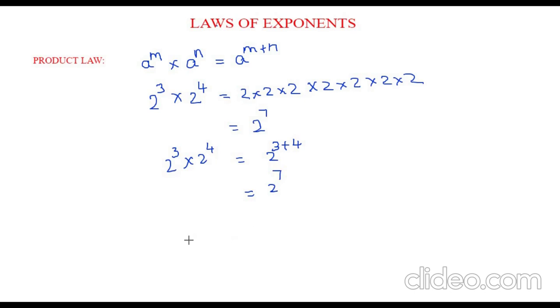Now let's take another example: 3 to the power of 8 times 3 to the power of 9. In this case, it is difficult to write 3 eight times and then 3 nine times. So instead of writing so much, we will directly use the law a to the power of m plus n, which is 3 to the power of 8 plus 9, which is 3 to the power of 17.